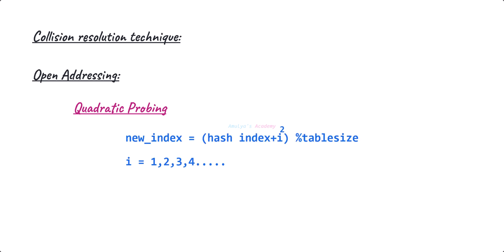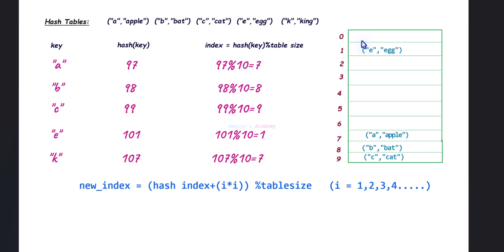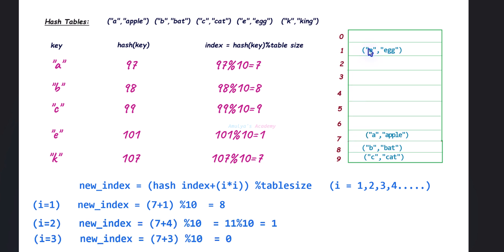Quadratic probing uses a quadratic function to determine the next slot to check, using a formula where the i value steps as 1, 2, 3, and so on. In this example, the collision occurred at index 7. Quadratic probing checks index 8 first, then jumps to index 1, then index 6, following the quadratic formula pattern.